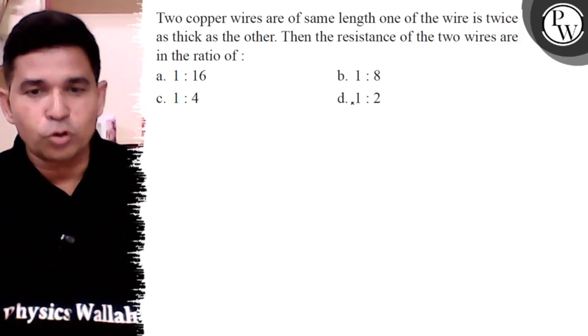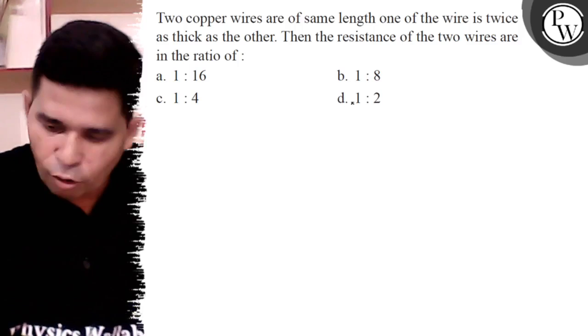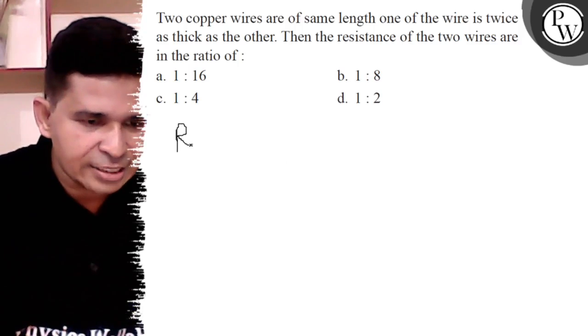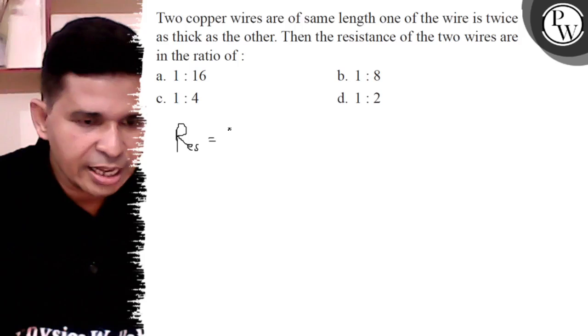Then the resistance of two wires are in the ratio of... We know that the resistance of any wire is rho L upon area.